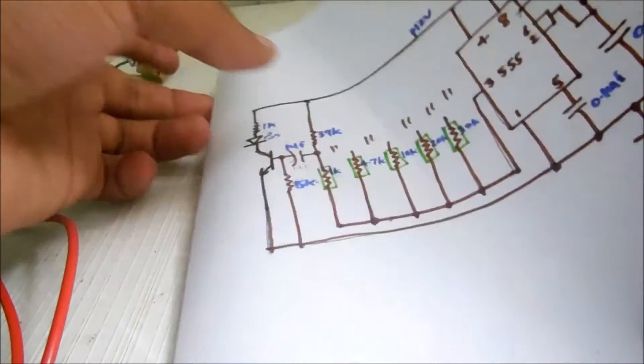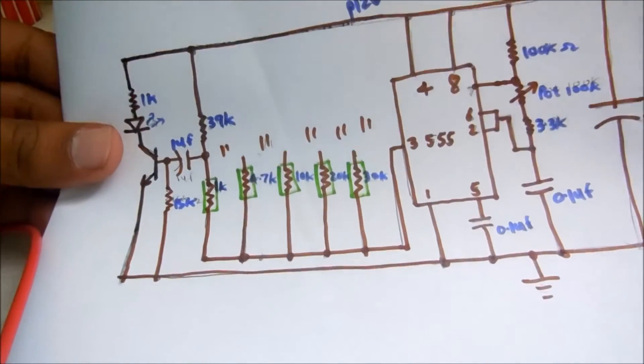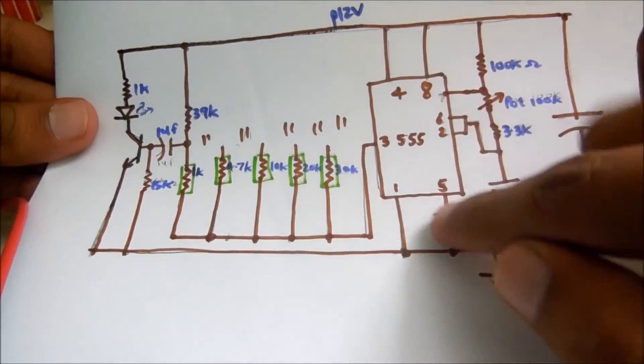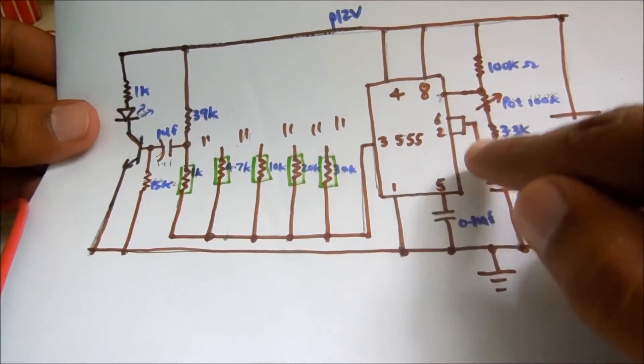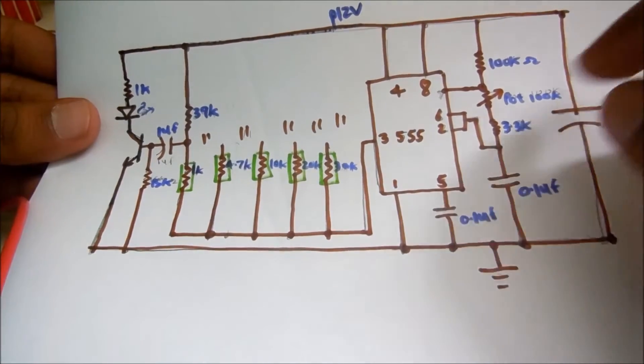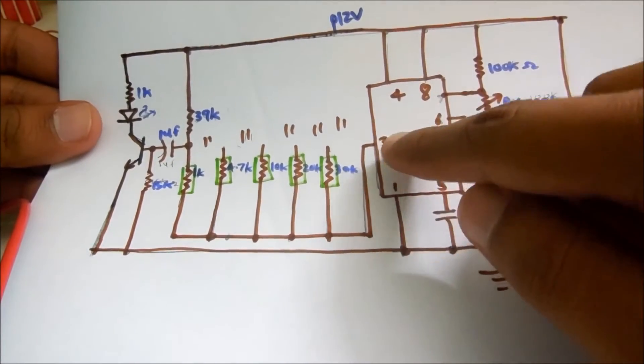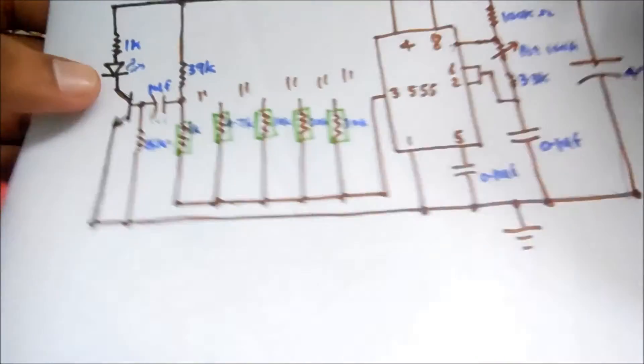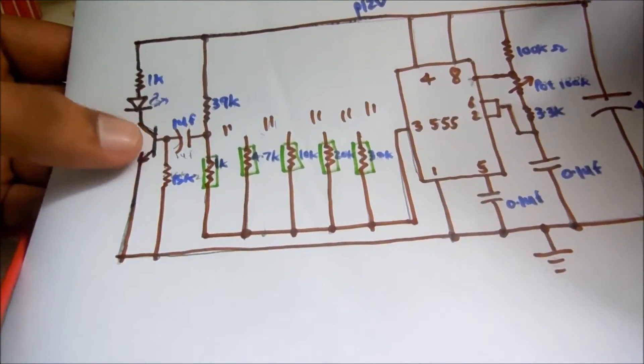So this is the circuit diagram. It uses a 555 timer IC in astable mode. And the output from the third pin is given to this block. Now this is a negative edge trigger, similar to the negative edge trigger.